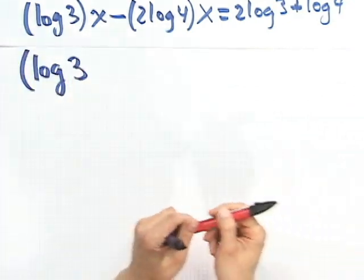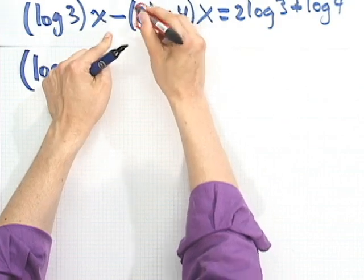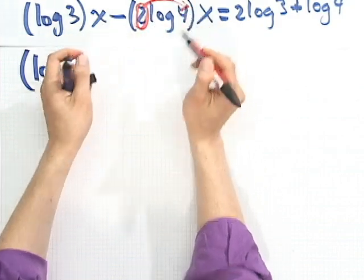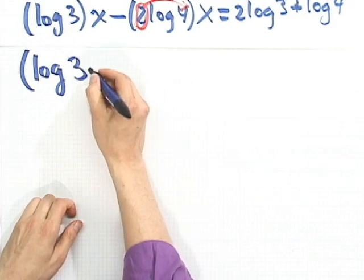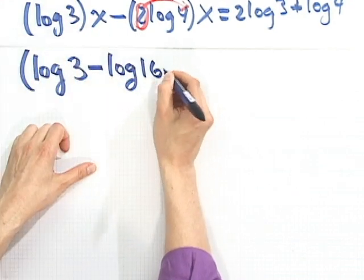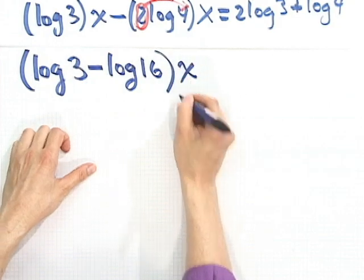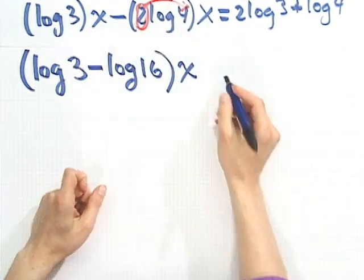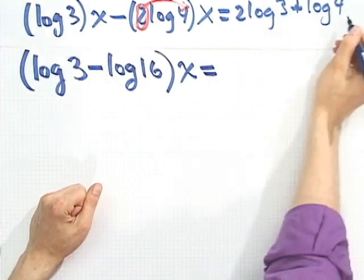So the first thing I do is notice I can factor out the x here. And so if I do that, I've got a log 3. But actually I'm going to do a little simplification at the same time because notice this 2 can be brought upstairs to this exponent on a 4. And I could write that as minus log of 4 squared, which is 16x. So I factored out the x and also did that step at the same time.